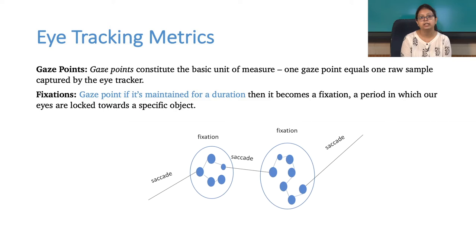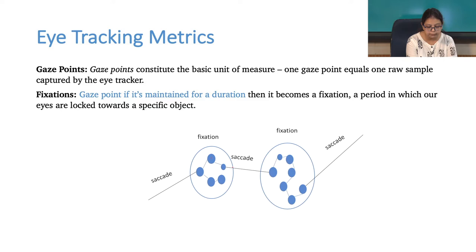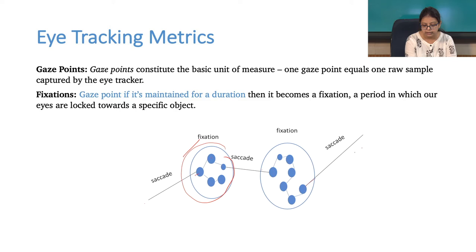A gaze maintained for a particular duration is called fixation. Whenever you look from one point in the stimulus and move your eyes to another point, it is called a saccade — movement of the eye describes the saccade.